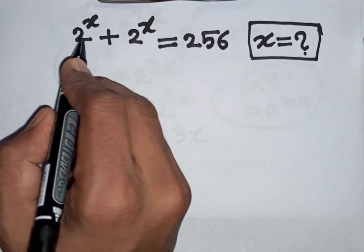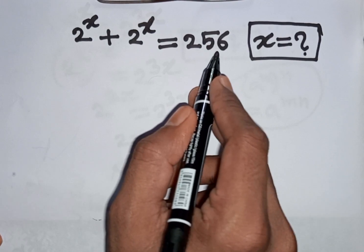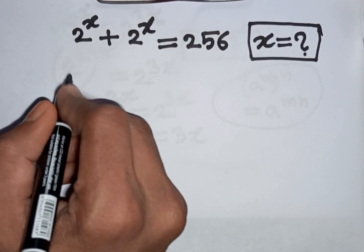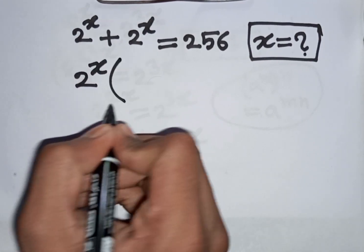How to solve 2 power x plus 2 power x is equal to 256. Find the value of x. So we see 2 power x is common, so 2 power x is out of the bracket.